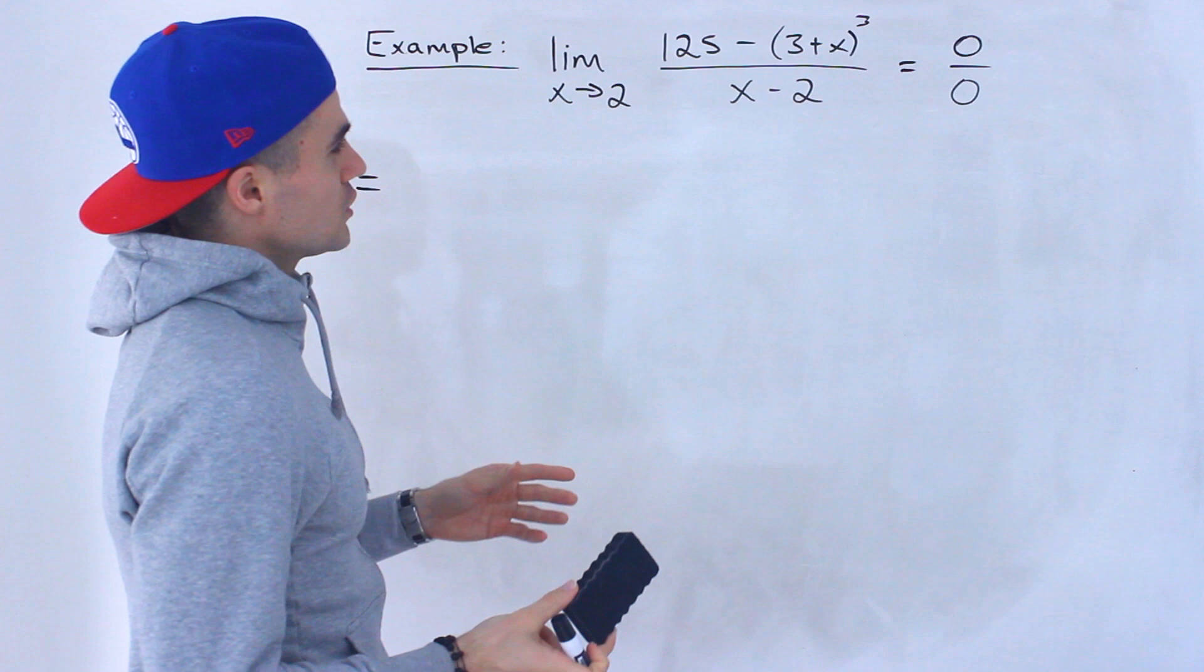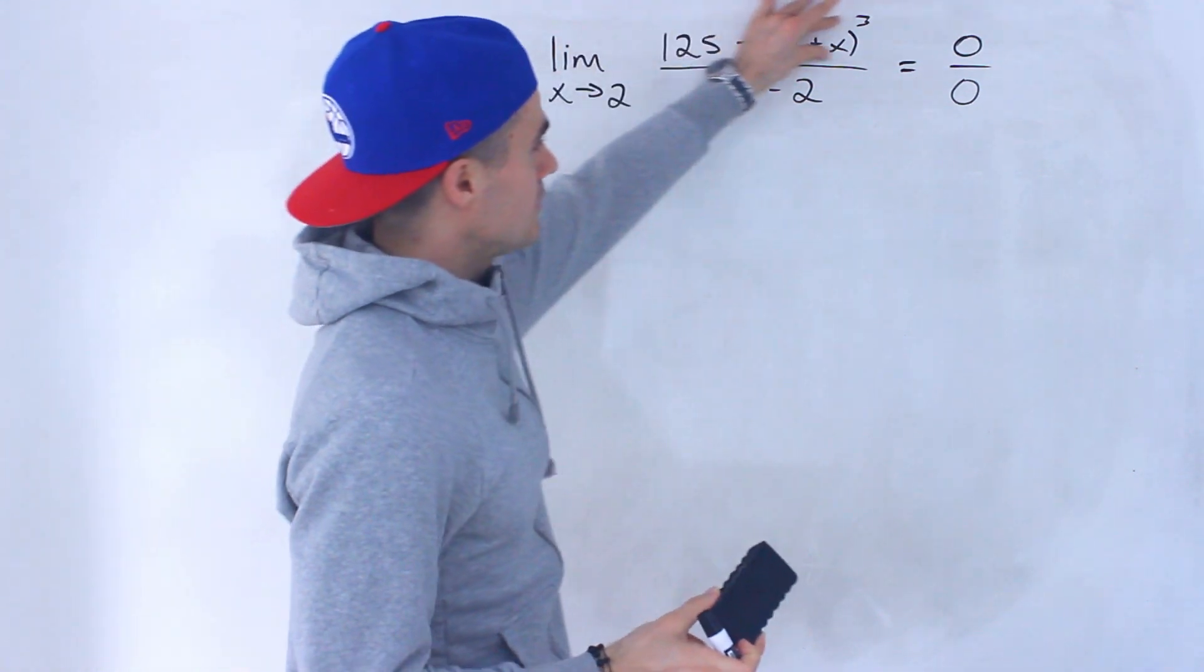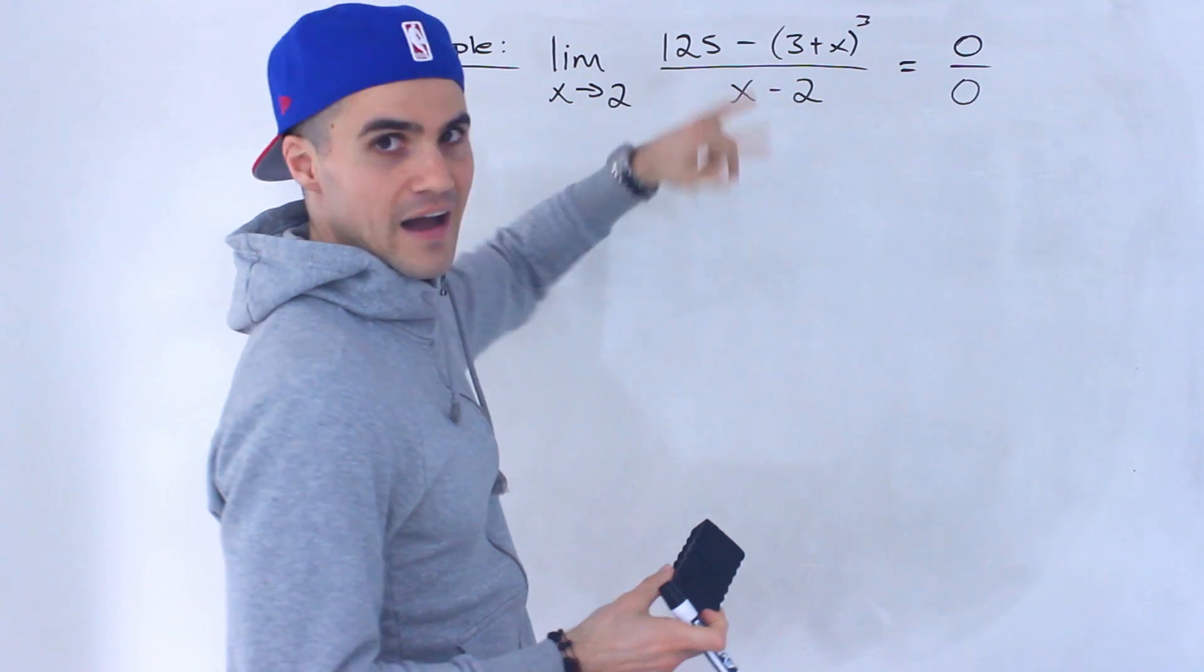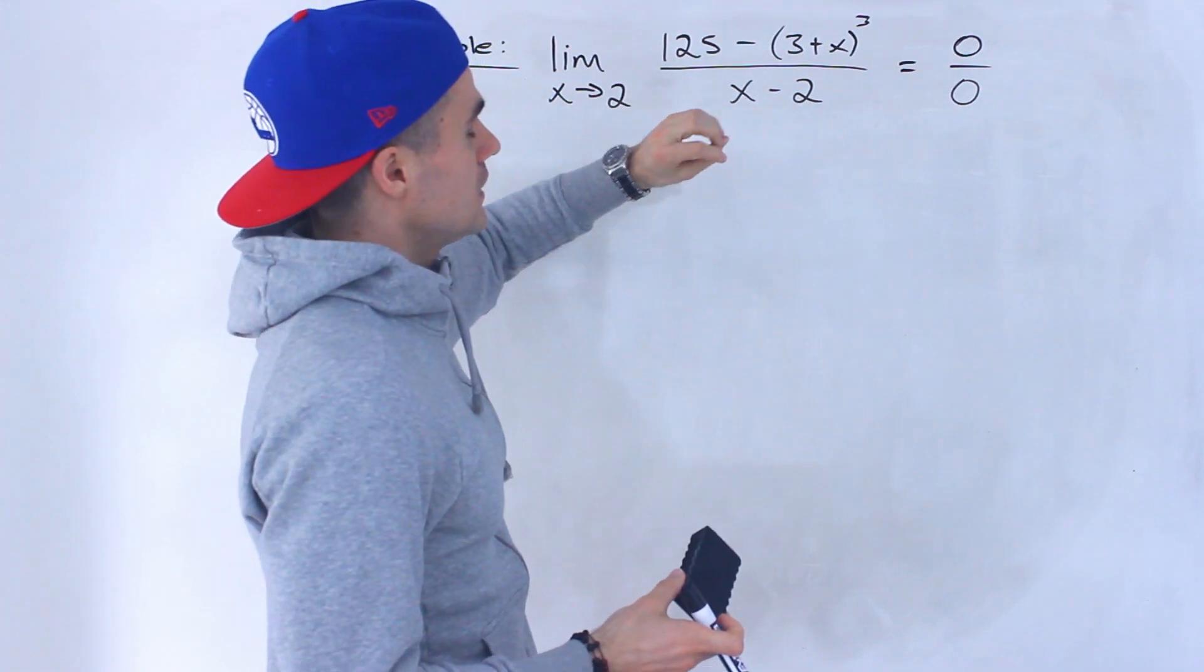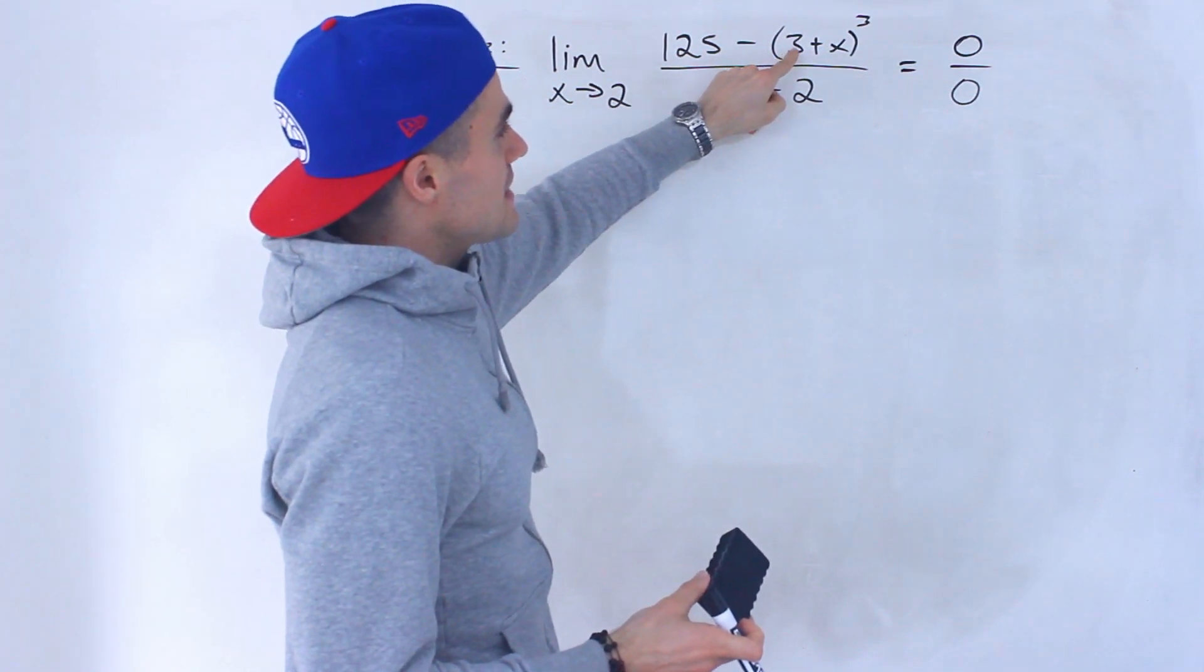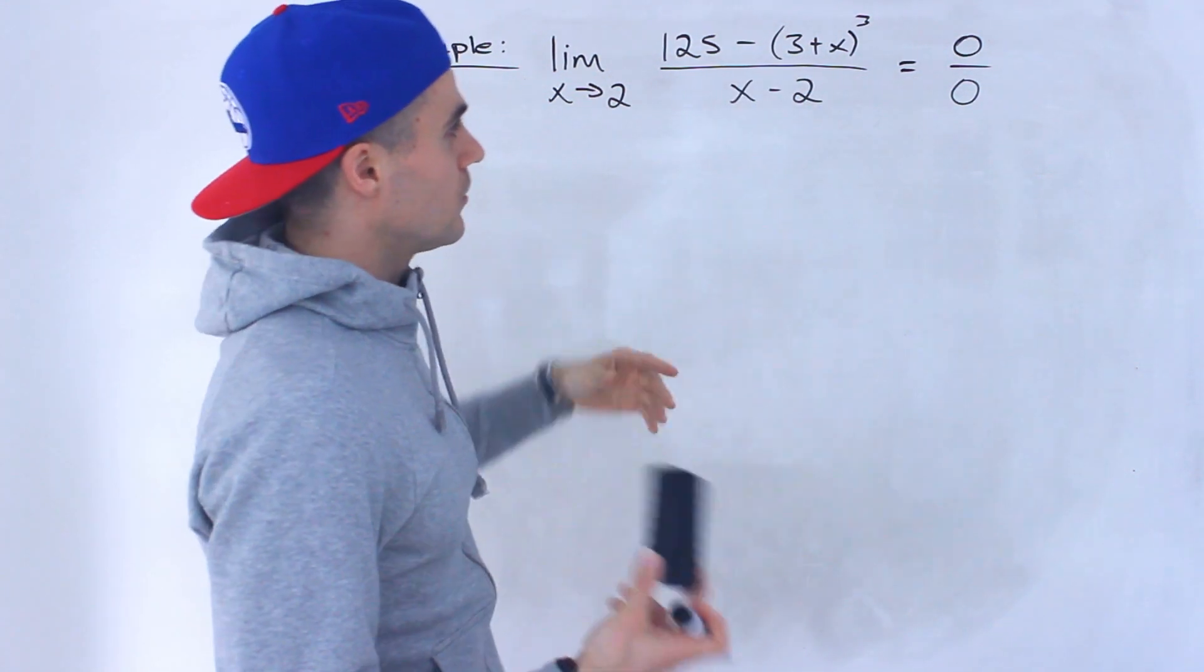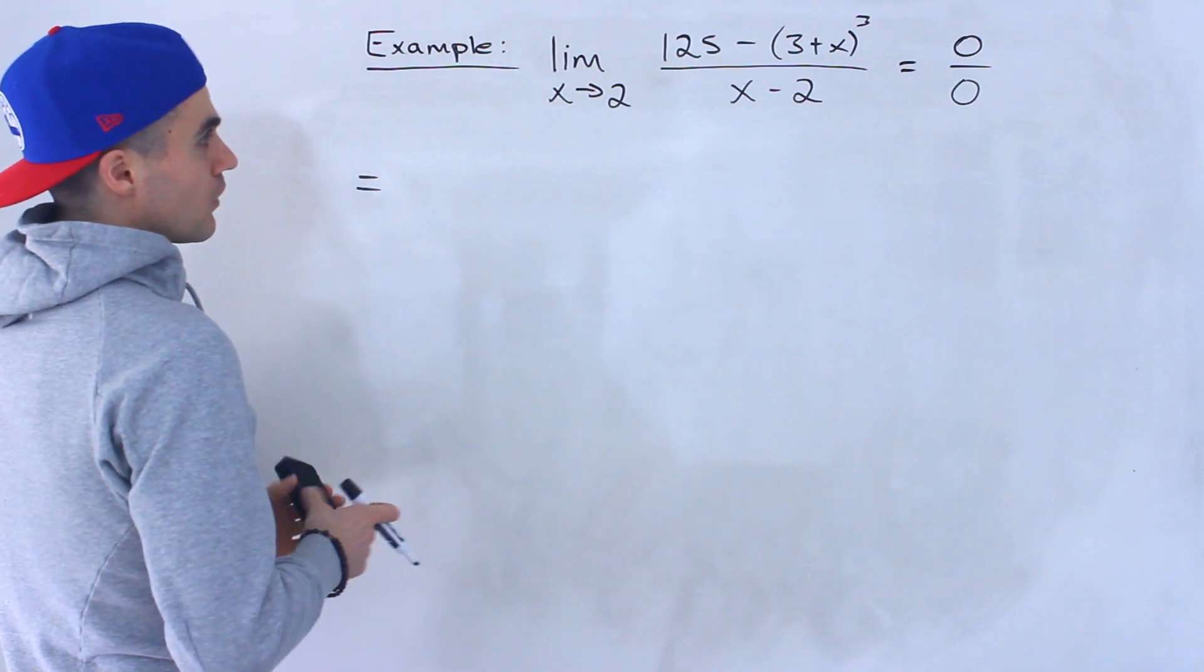And there's actually a couple of different ways you can do it. One way is you can expand the whole numerator and then factor it and try to factor out an x minus 2. But the problem is that this (3 plus x) to the power of 3, there's going to be three brackets to FOIL out. So that's going to be a lot of work.